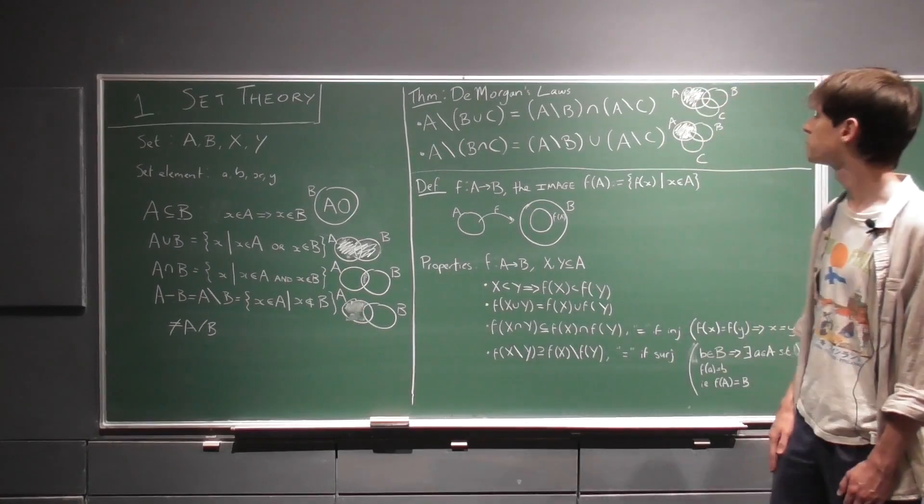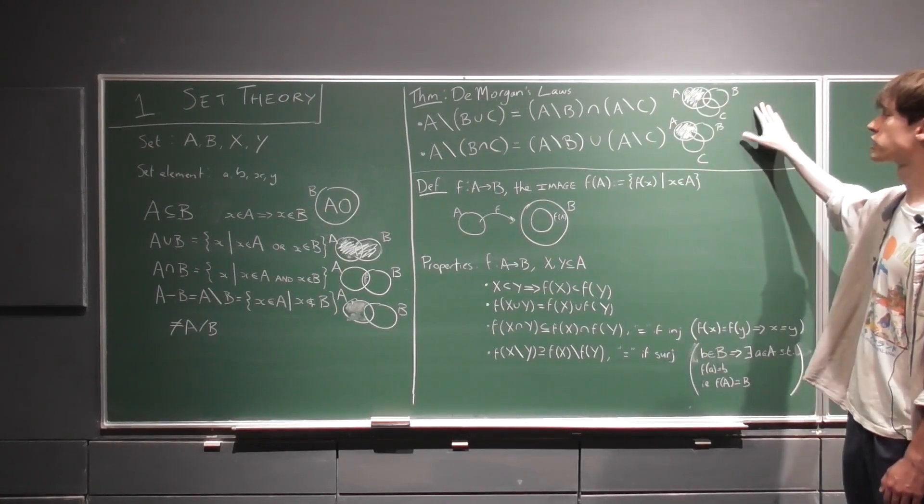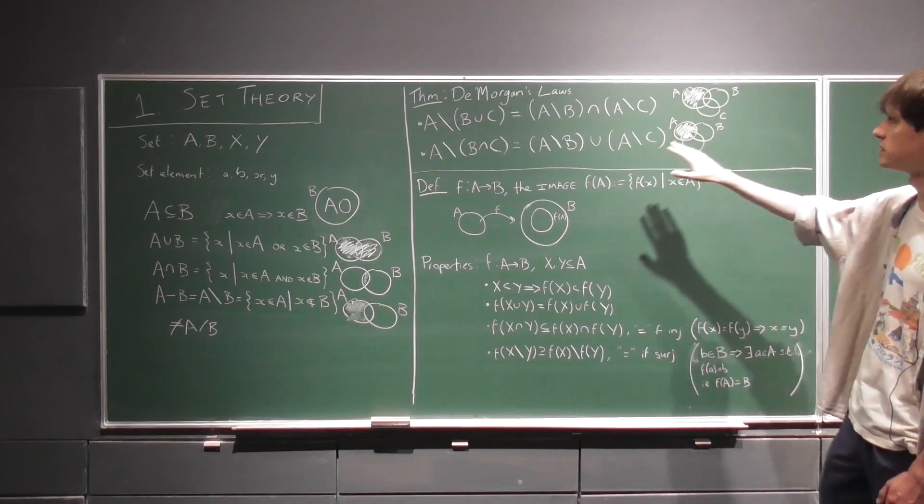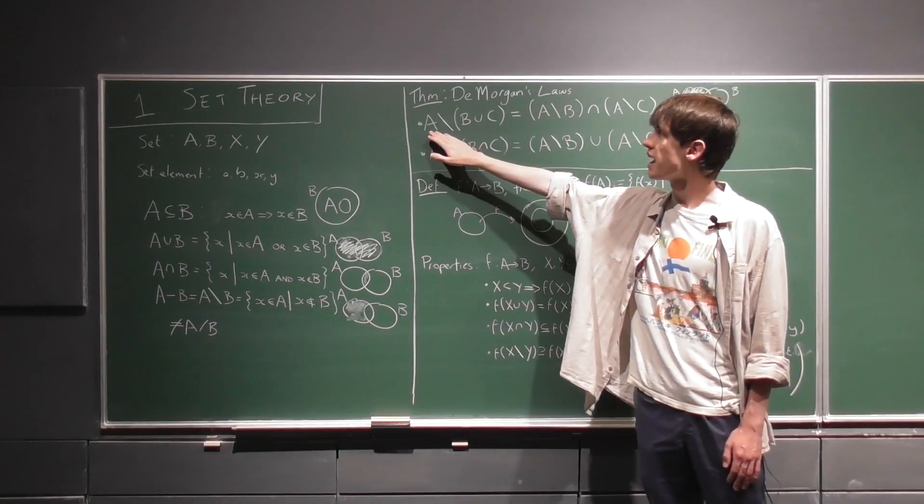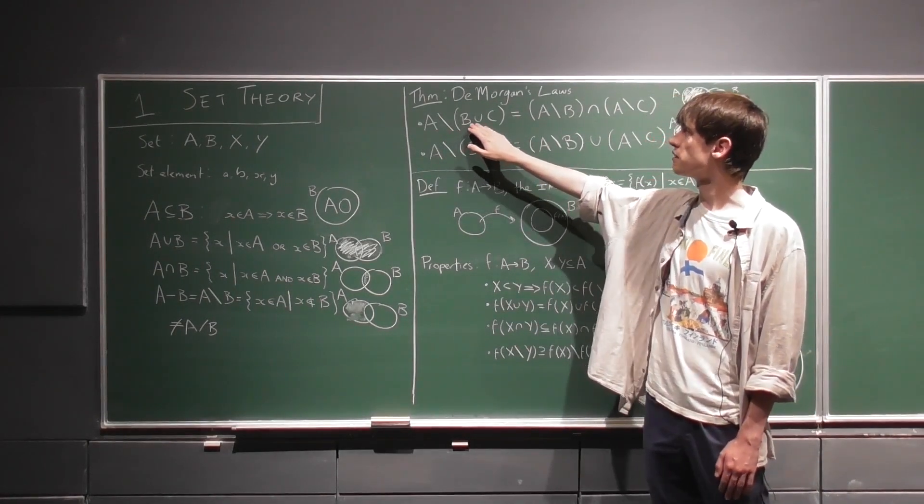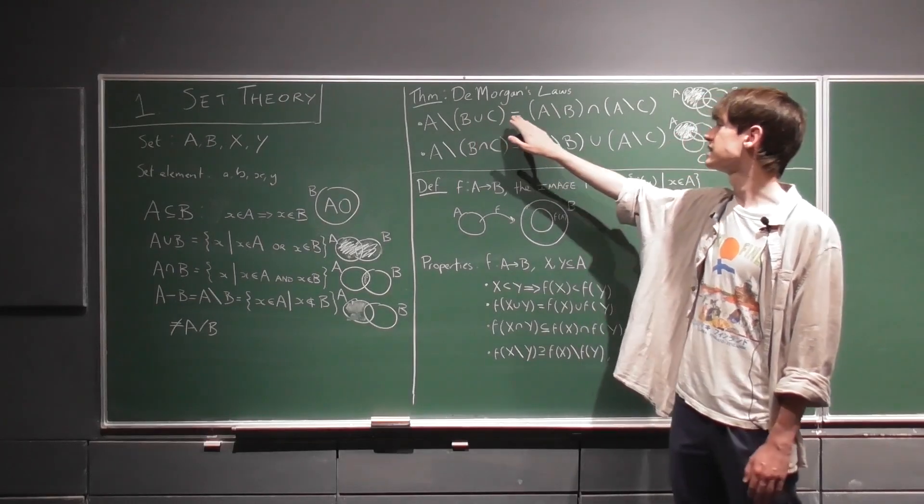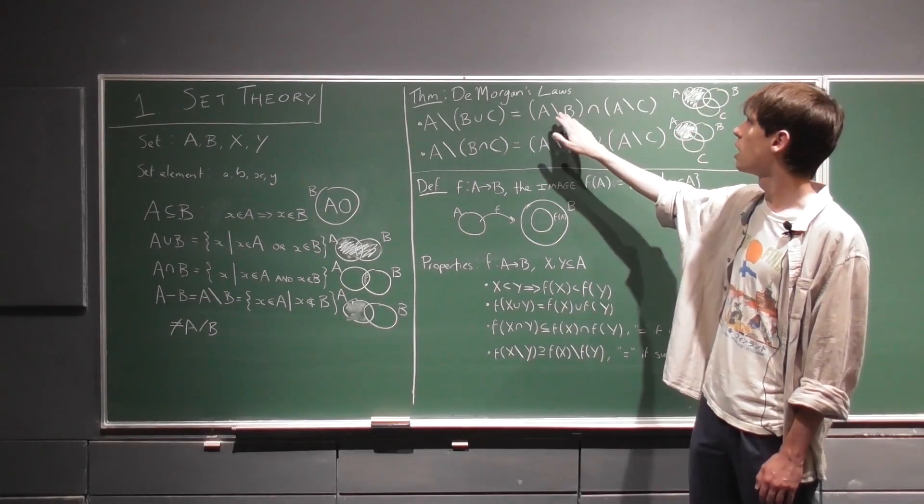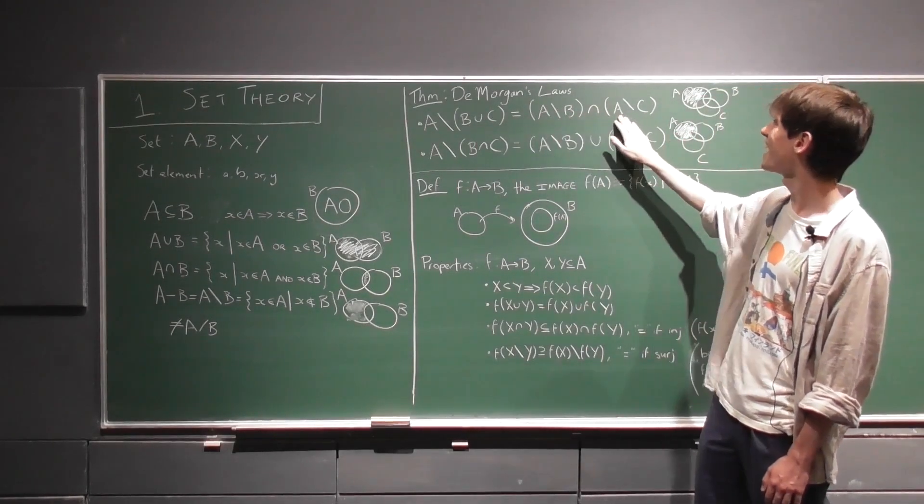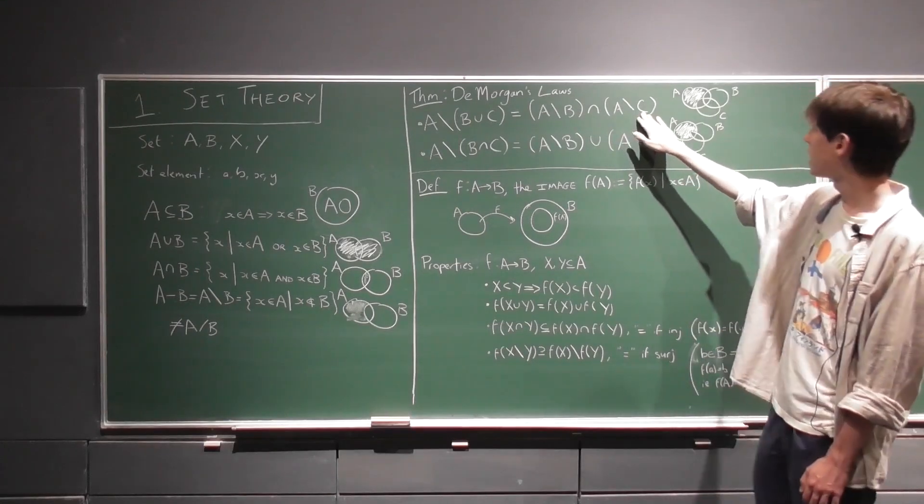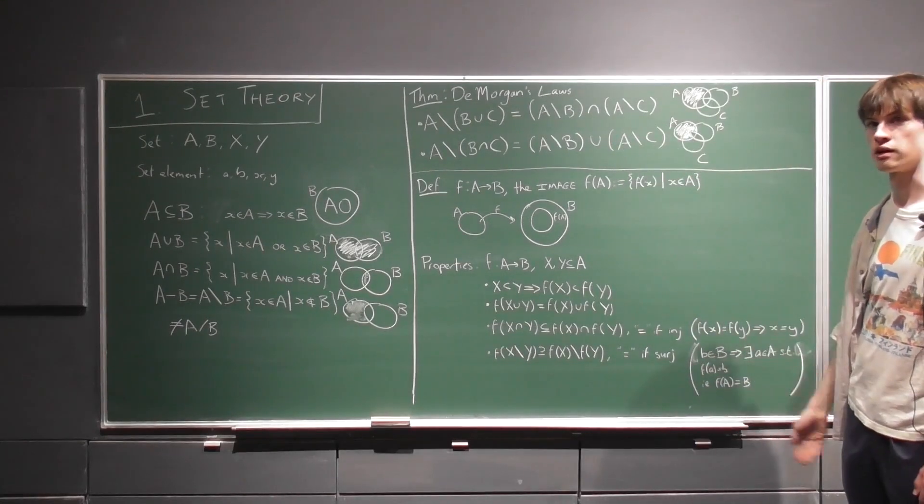Now for some famous results, De Morgan's Laws. Here we can see that they say that A less the union of sets B and C is equal to the intersection of A less B and A less C.